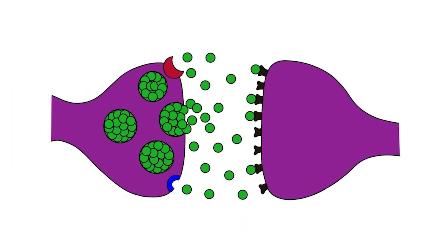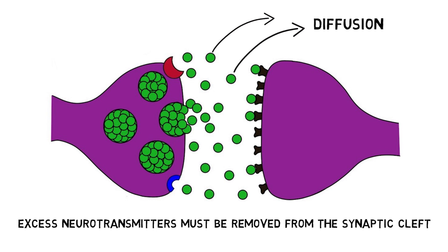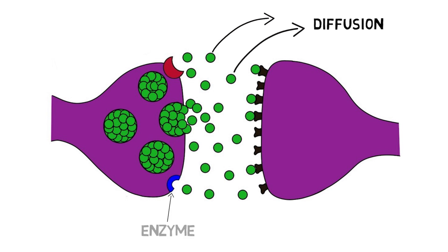After neurotransmitters have communicated with the postsynaptic neuron, they must be removed from the synaptic cleft to keep them from repeatedly binding to and potentially overstimulating receptors. A fraction of neurotransmitter molecules will diffuse out of the synaptic cleft, but it is typically a small amount. Some synapses, such as those for the neurotransmitter acetylcholine, rely primarily on the use of enzymes to degrade neurotransmitters to remove them from the synaptic cleft.